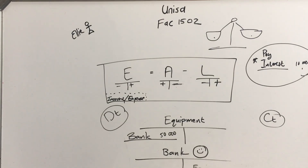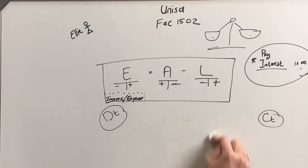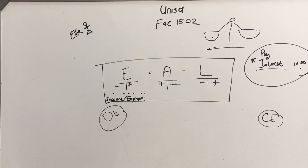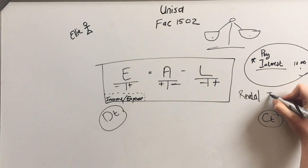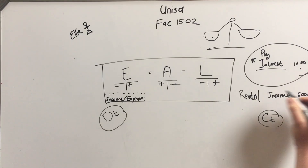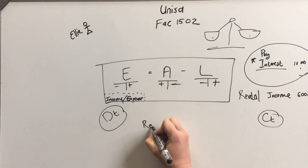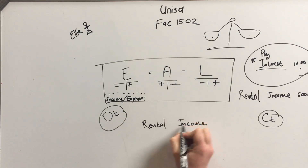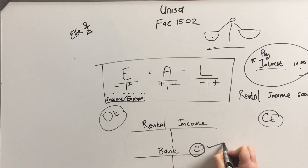That is how easy accounting is. Let's do something where we get money in. Sales is complicated — that's another video. Let's say we're getting rental income of 6,000 Rand. Your first account name is rental income. Your second account is bank — if you're getting money in, it's generally bank. Start with bank — it'll give you lots of marks.